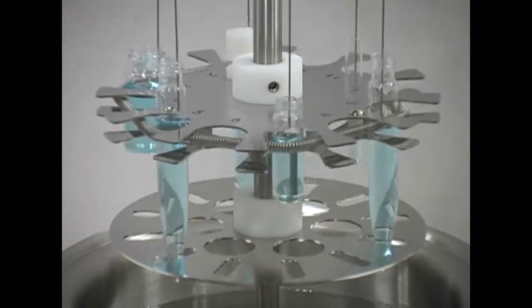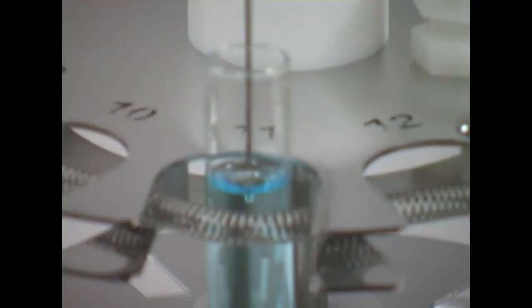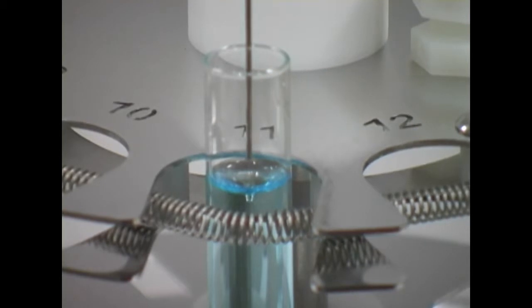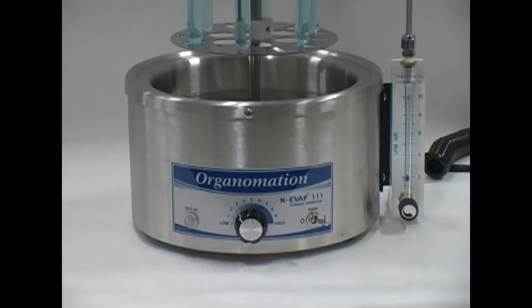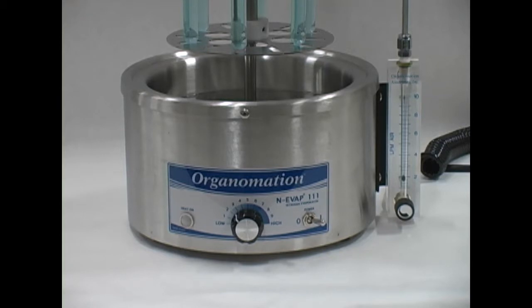The Enovap line provides controlled concentration of samples using a combination of nitrogen gas and a heated bath. The standard 6-Position model comes with a popular water bath option which provides reliable, uniform heat.